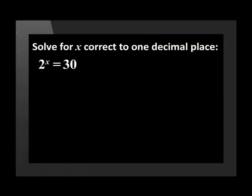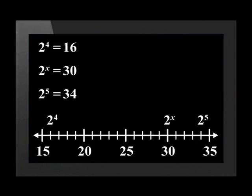Look at this example. Solve for x, correct to one decimal place, if 2 to the power of x is equal to 30. We cannot make the bases the same, so we need to get an approximate answer through trial and error. First, we need to find the approximate position of x on a number line.